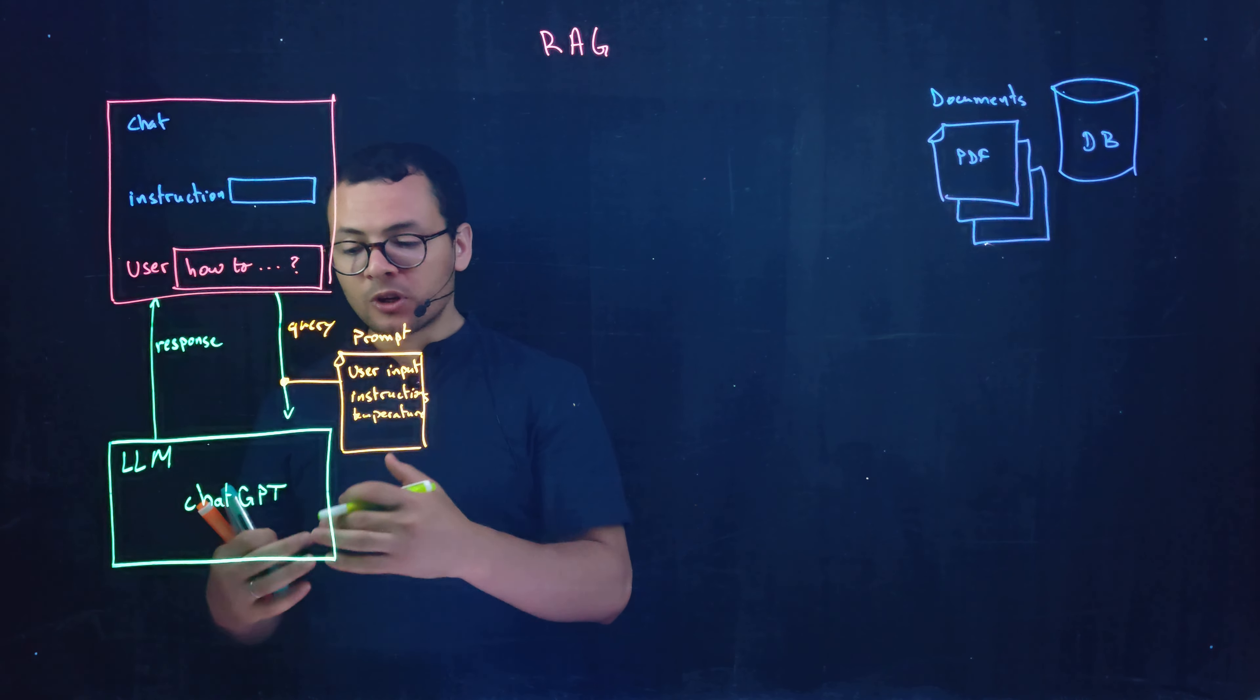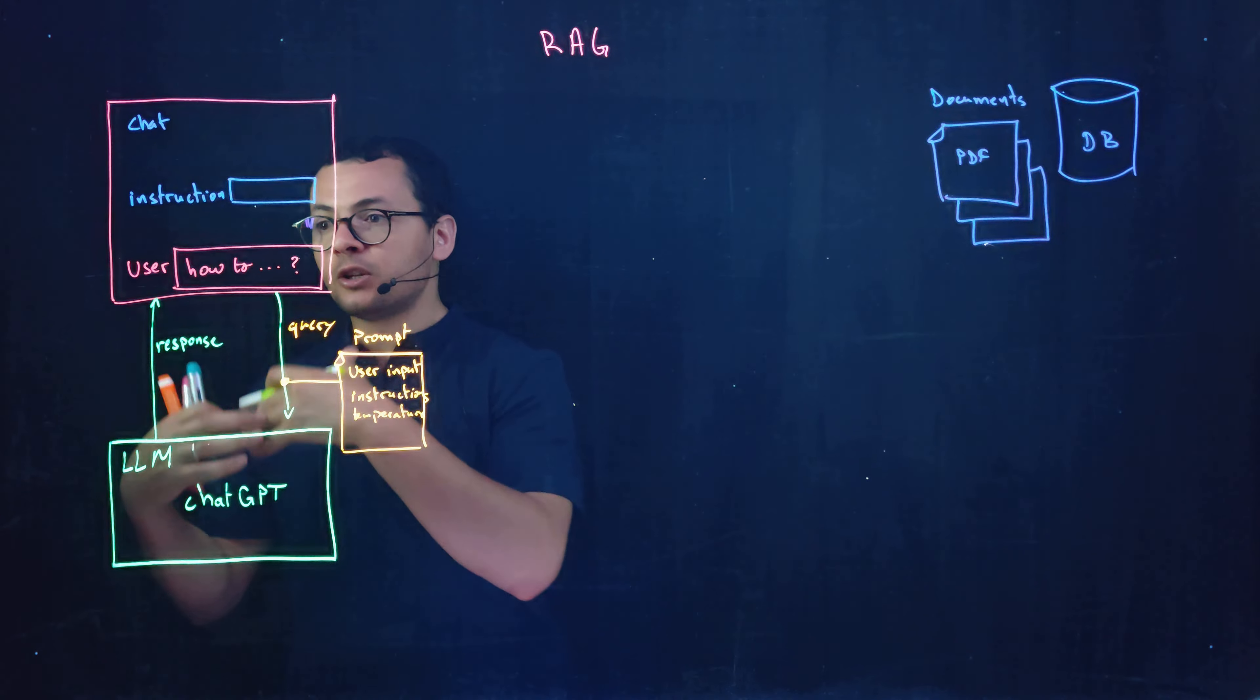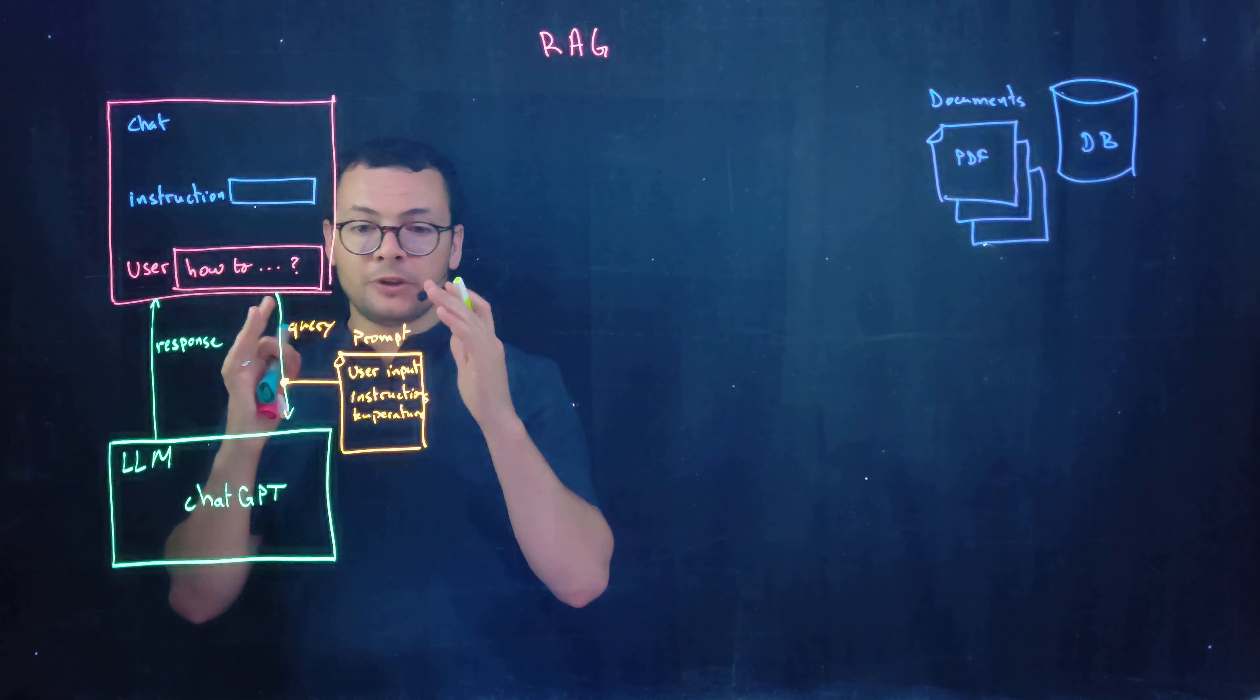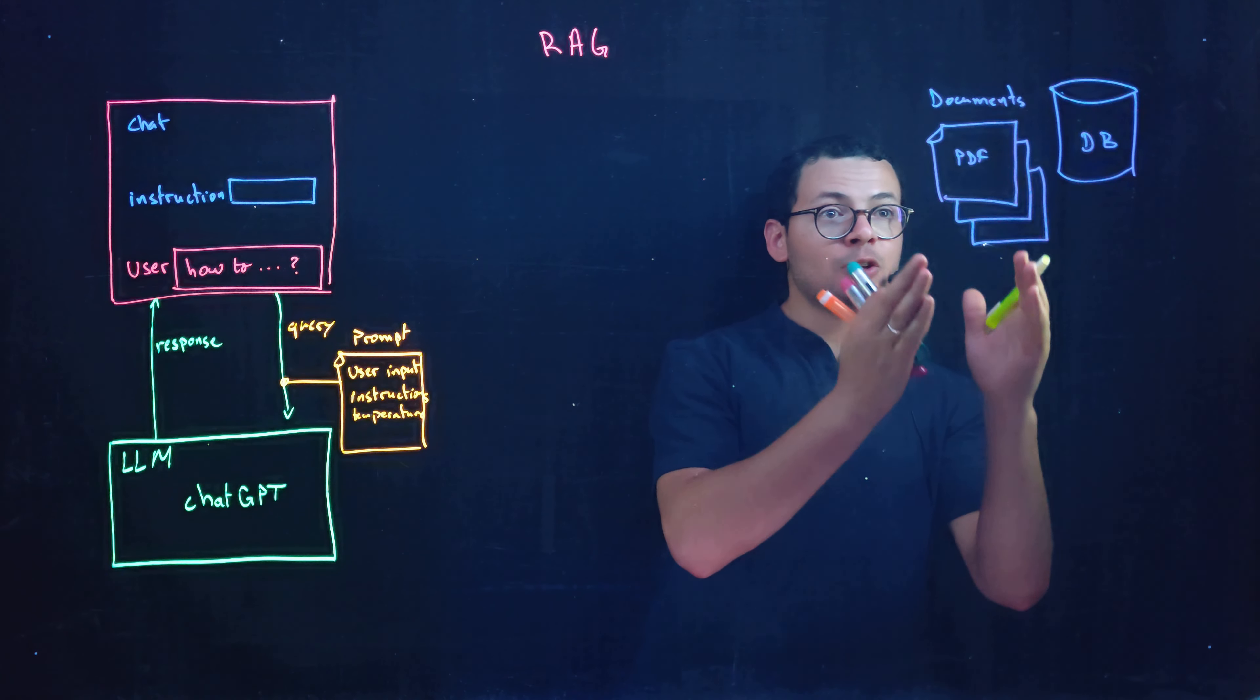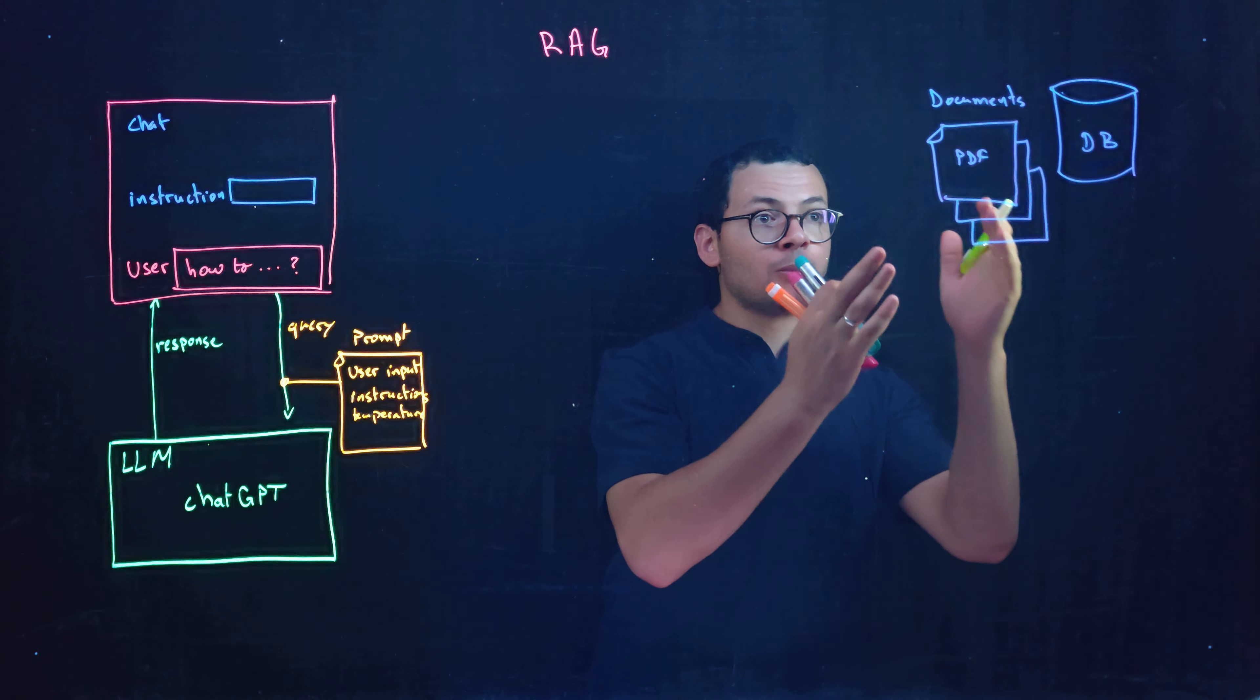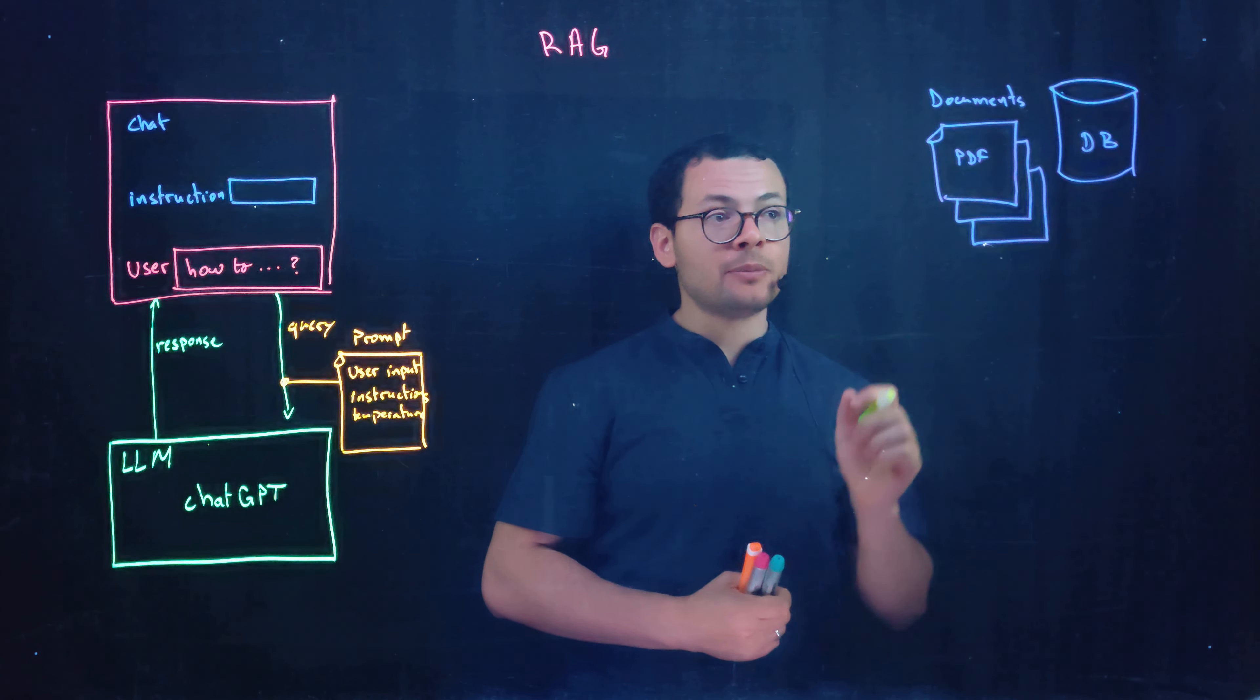ChatGPT then will get those documents, will analyze it and then he will give the right answer to the user. But now if the user doesn't know exactly which document contains that information because here we might have thousands or even millions of these documents.